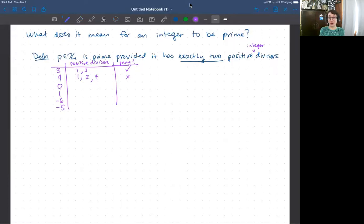What about zero? What are the positive divisors of zero? Well, one divides zero. Zero is zero times one with a remainder of zero. What about two? Yep. Three. Yep. Four. Yep. So zero is not prime. Zero has way more than two positive divisors.